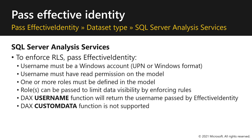To enforce row-level security for SQL Server Analysis Services, pass effective identity. The username must be a Windows account, and the username must have read permissions on the model. One or more roles must be defined in the model, and these roles can be passed to limit data visibility by enforcing rules. The username function will return the username passed by effective identity. Note that the custom data function is not supported.